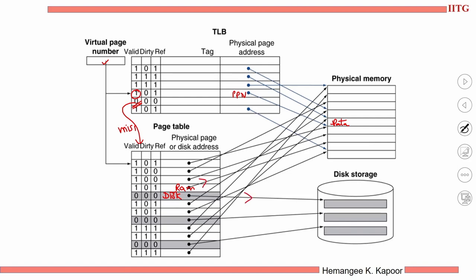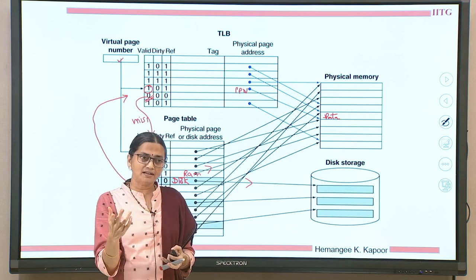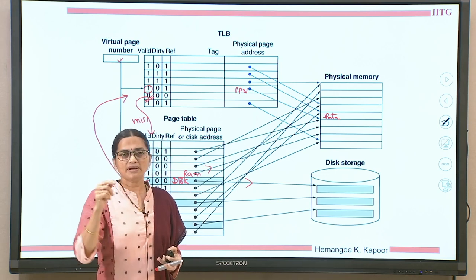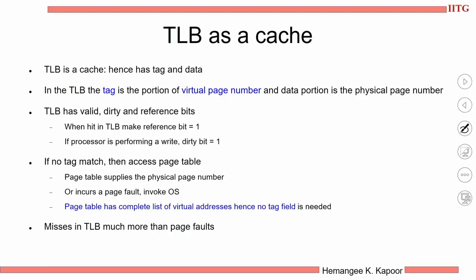Depending on the physical page address or the disk address, we will access the data. Once we access the data, we bring in this entry and store it in the TLB because it was recently accessed. So: go to the TLB, find the physical page number — good. If the data entry is not valid, go to the page table, access the correct VPN-to-PPN mapping, and bring that mapping into the TLB. The TLB acts as a cache and hence has a tag and data.